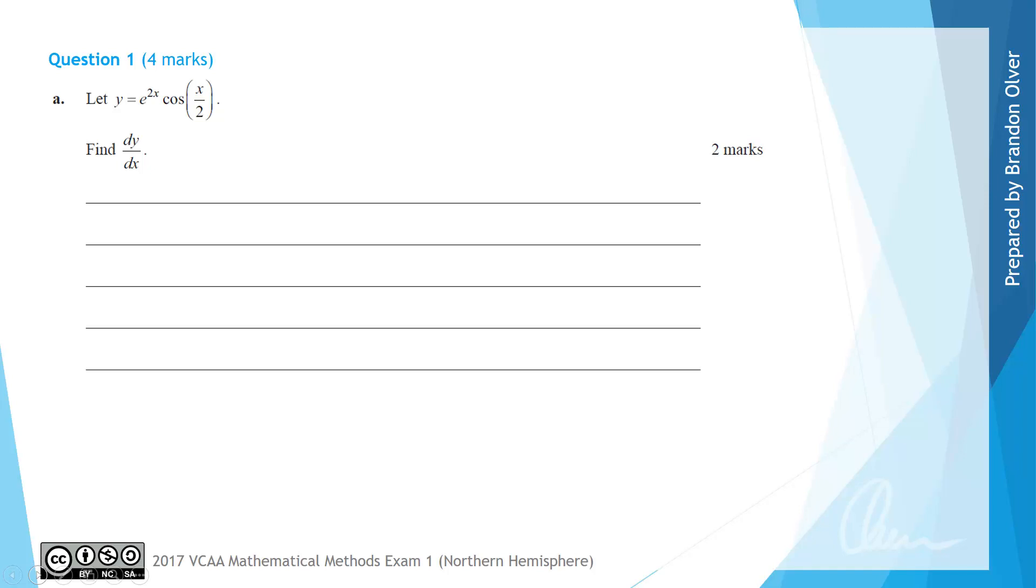For question 1 part A, we have y = e^(2x) × cos(x/2), and we're asked to find the derivative dy/dx. Inspecting this function, we can see it's two functions multiplied together, so we need to use the product rule to differentiate this expression.